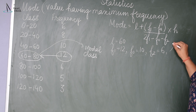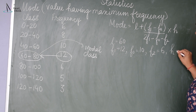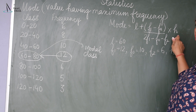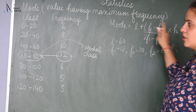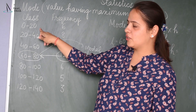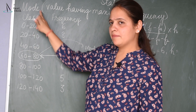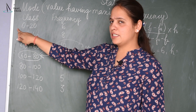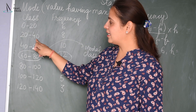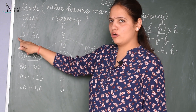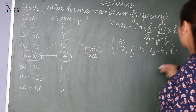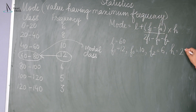Now H is the width of the class interval. The width is upper limit minus lower limit. For our classes that is 20. So H = 20.